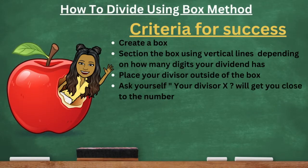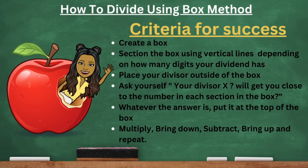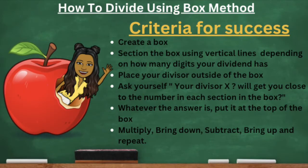In today's class, you guys are going to learn how to divide using the box method. Your criteria for success says: create a box, then section the box using vertical lines depending on how many digits your dividend has. Place your divisor outside of the box. Then ask yourself, is your divisor times a number going to get you close to the number in each section? Whatever the answer is, put it at the top of the box, then multiply, bring down, subtract, bring up, and repeat. I know that's a lot to digest right now, but we're going to jump in and get started.